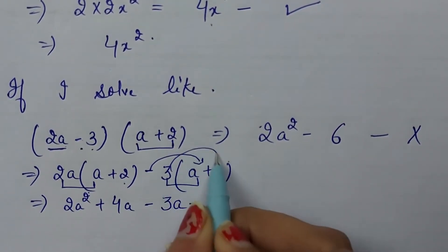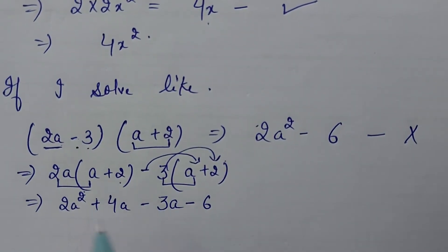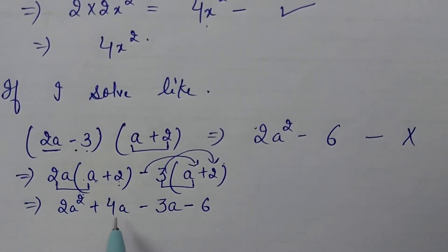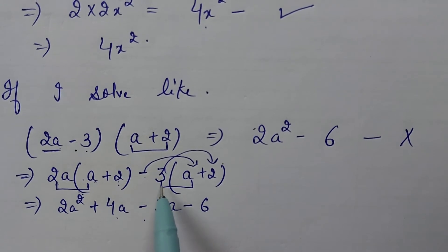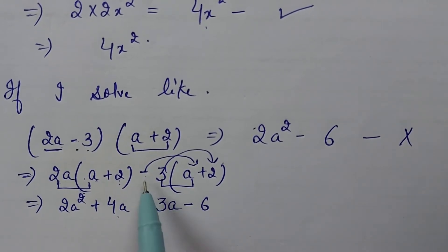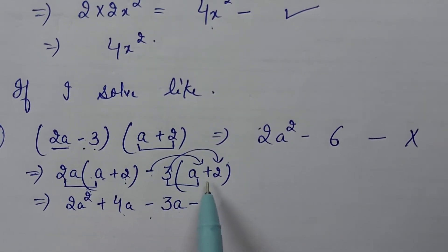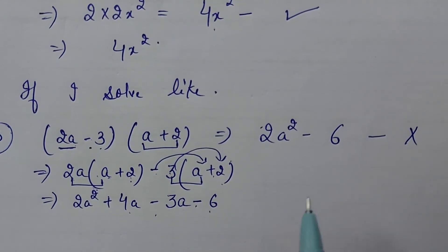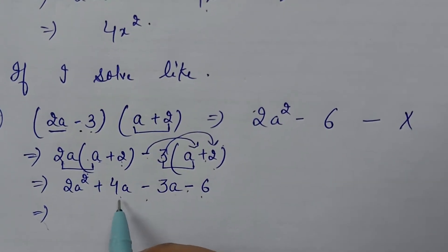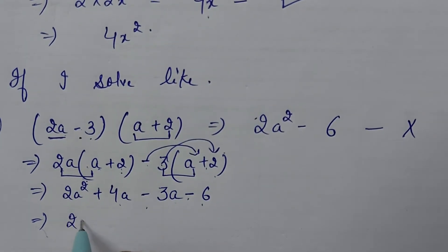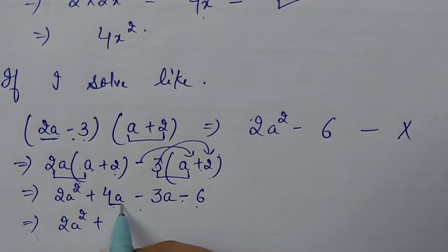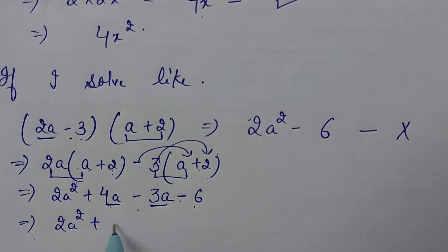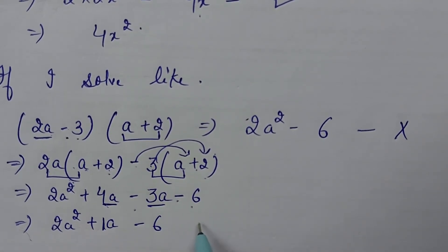To 3, 2 ka 6 aur minus jayega. So, hai dubara a minus 3a ko hai aise likhein. 2a ko a ke saath multiply kiya 2a square plus 2a ko 2 ke saath multiply kiya 4a aise likhein. 3 ke saath a ko multiply kiya 3a. So hai dubara aise likhein. 2a square plus 4a plus 1a minus 6. It is the correct answer.